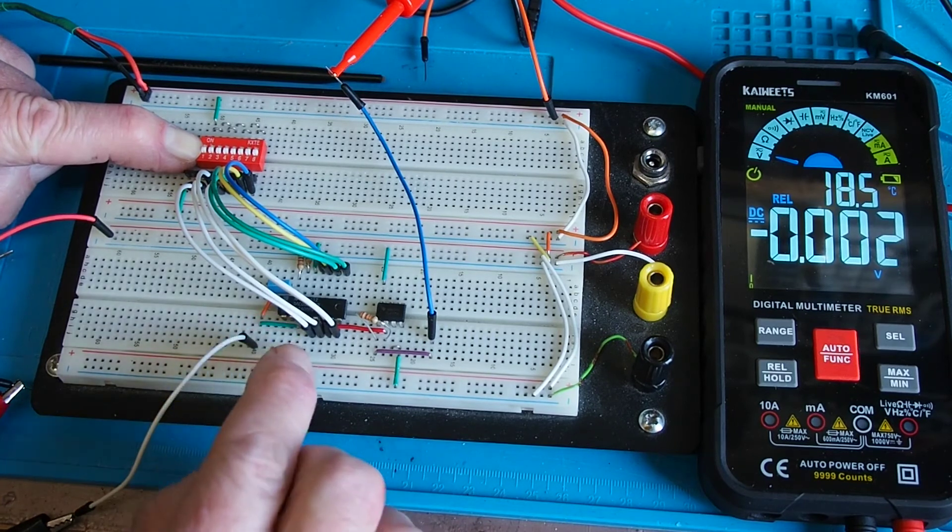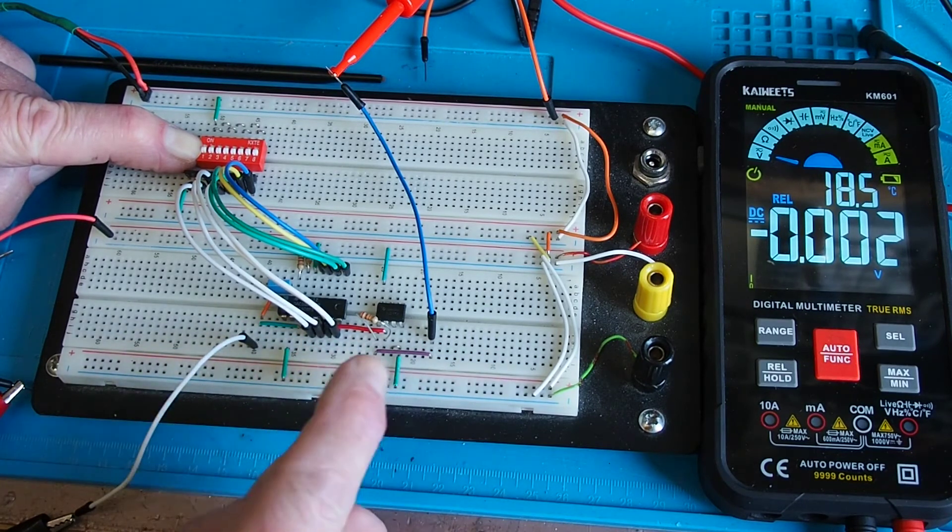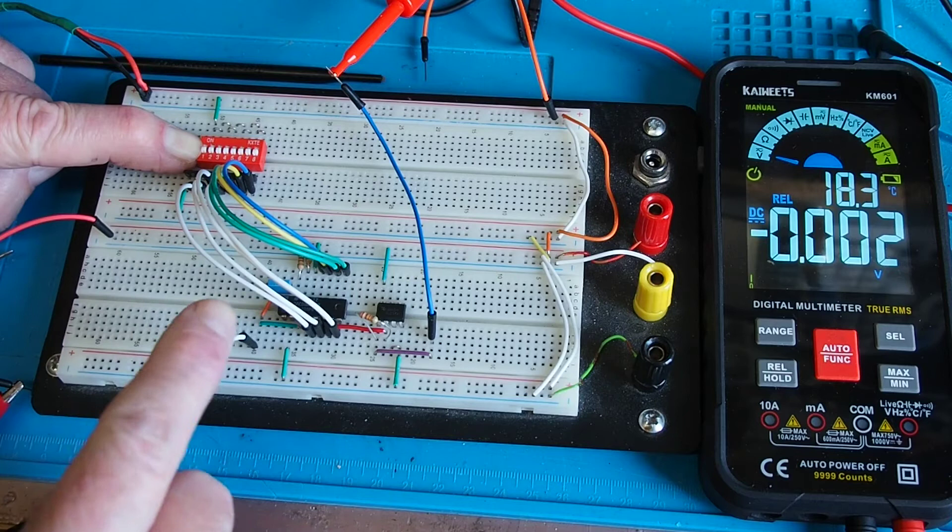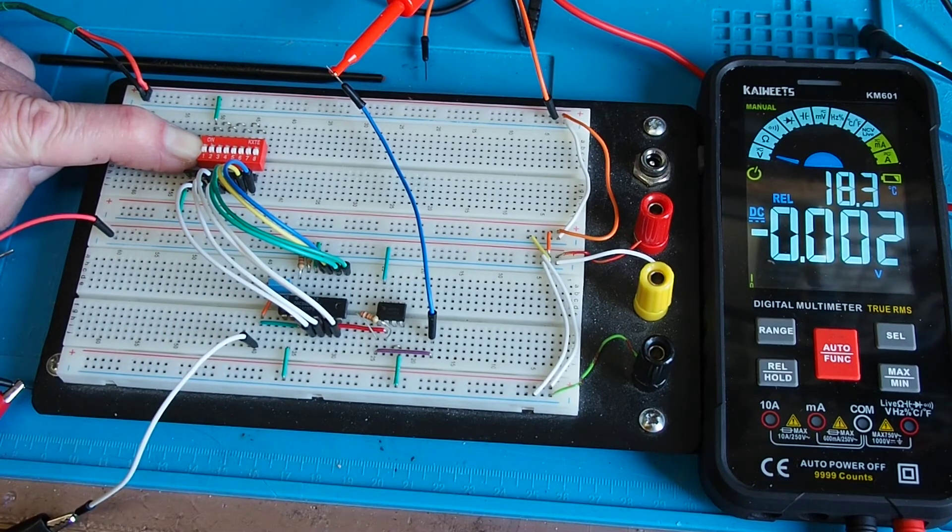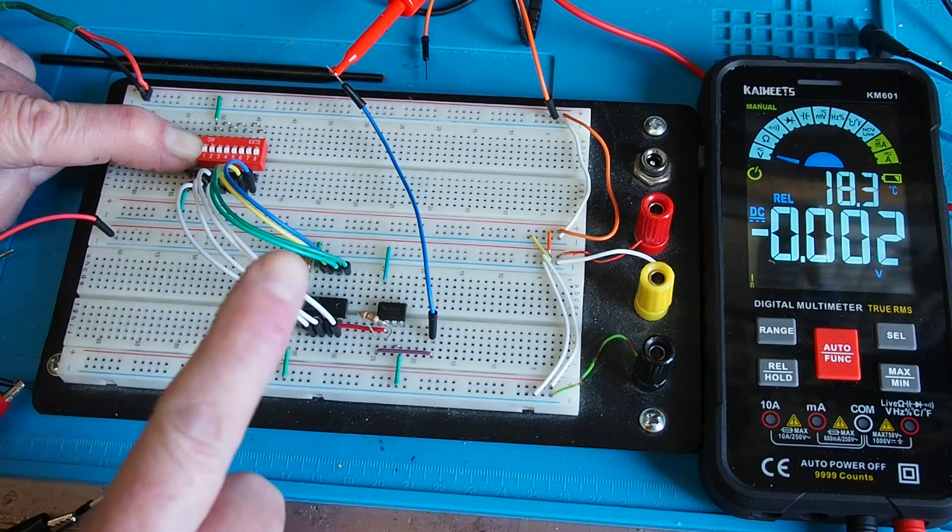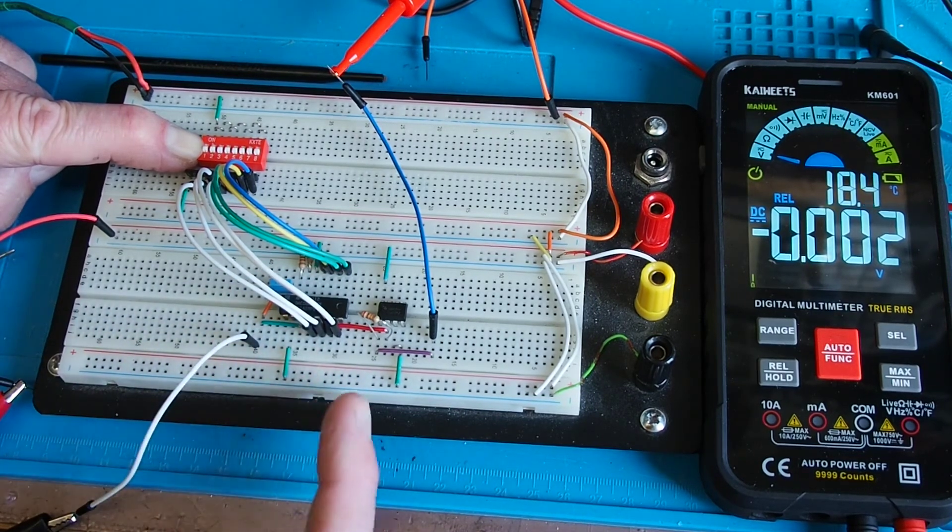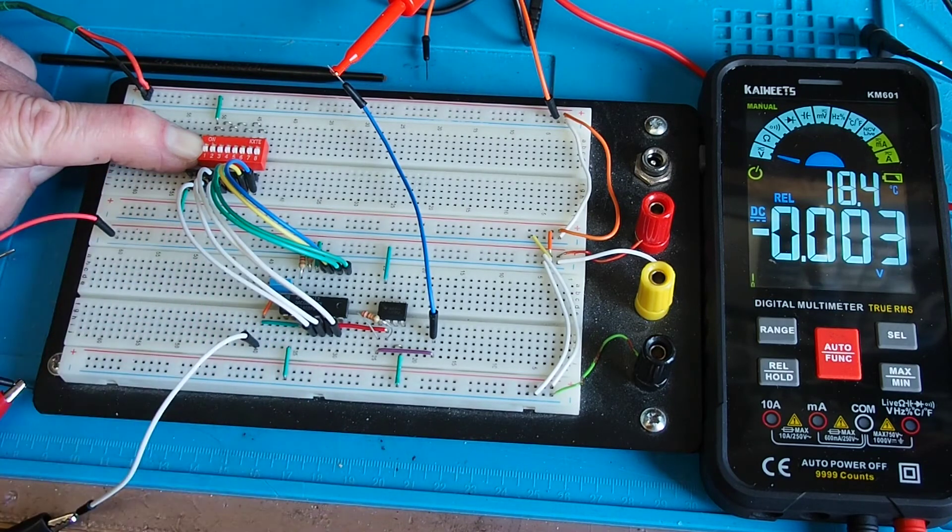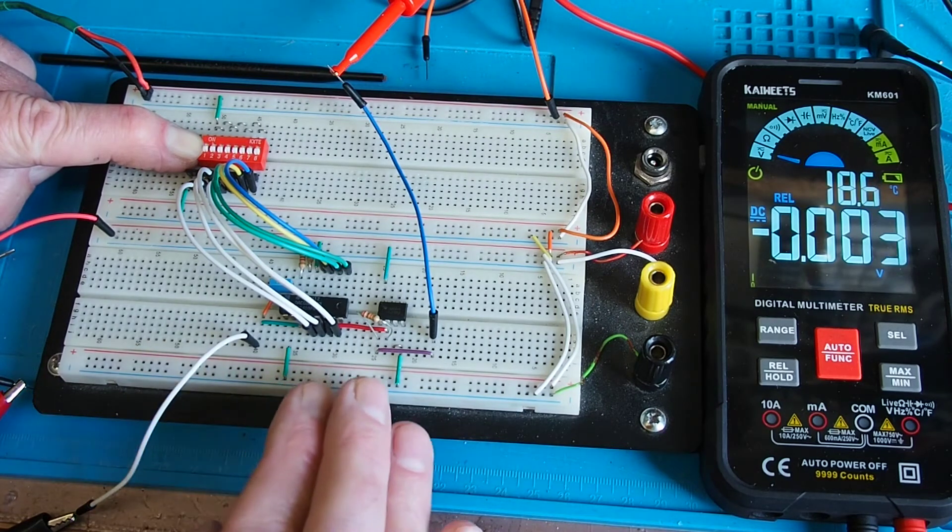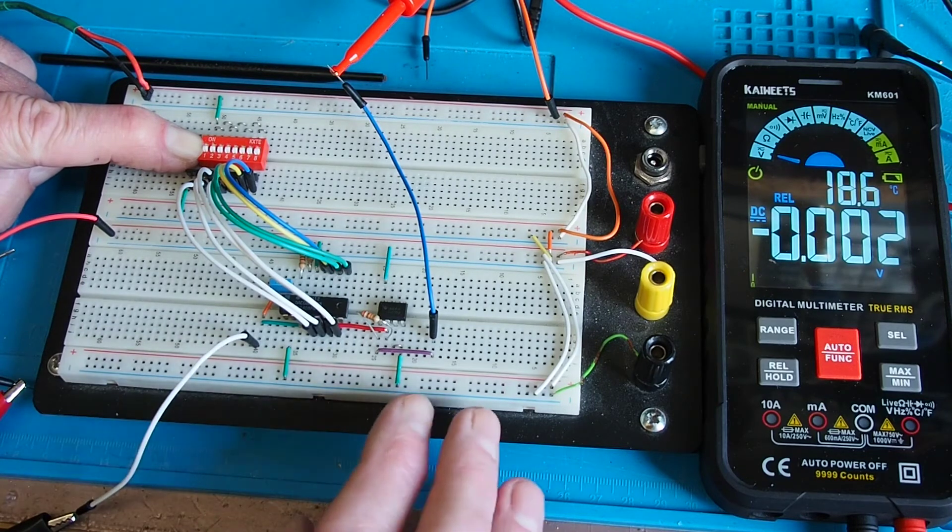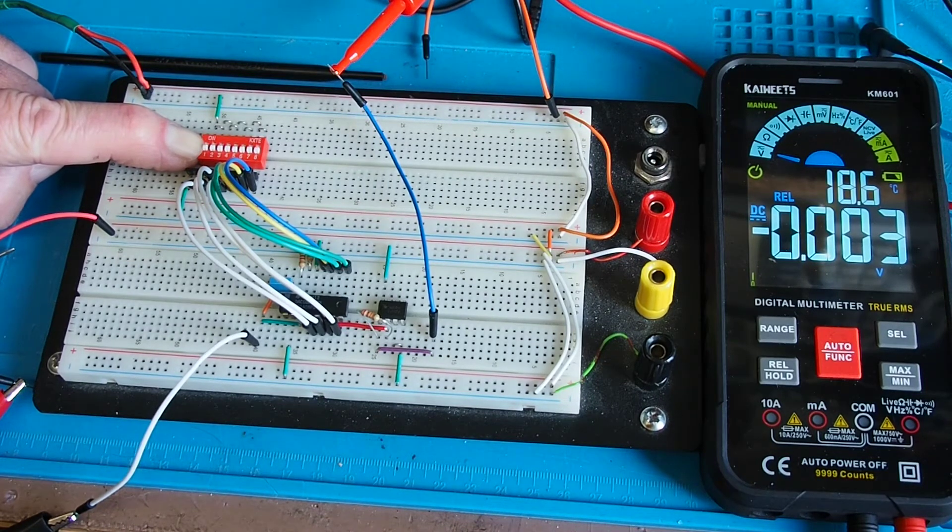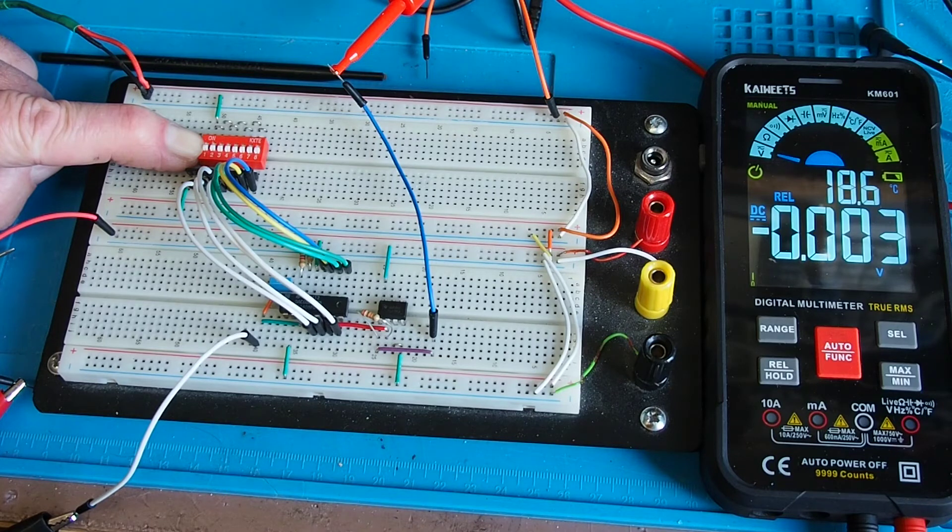So that's the DAC 0808 doing its job and you can hopefully see the data coming across. But let's try and do something a little bit more interesting because this chip obviously is capable of responding quickly to changes in the data line, a little bit quicker than I can switch on and off the dip switches. So let's see if we can turn digital to analog into action if you like and let's see if we can make it work as a proper circuit. So I'll just get set up for that and then let's see what we can do.